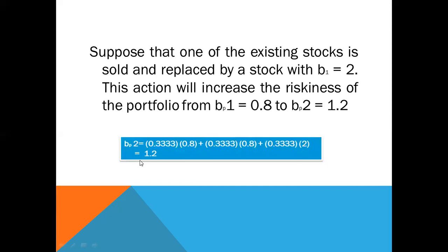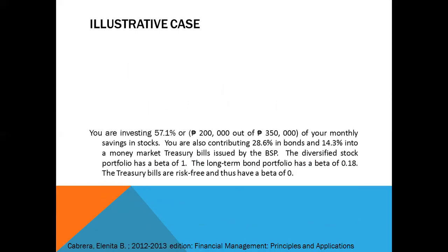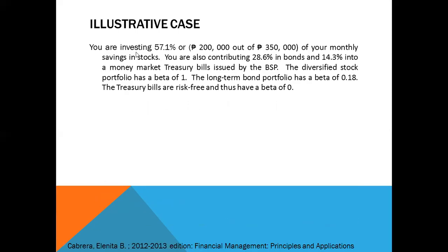That equals 1.2. Now let's look at an illustrative case. You are investing 57.1% (200,000 pesos out of 350,000 pesos) in stocks, 28.6% in bonds, and 14.3% in money market treasury bills issued by the BSP. The diversified stock portfolio has a beta of 1, the long-term bond portfolio has a beta of 0.18, and the treasury bills are risk-free with a beta of 0.